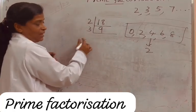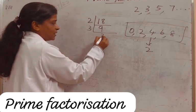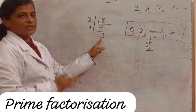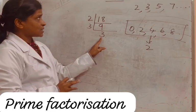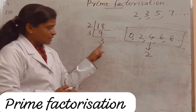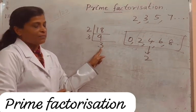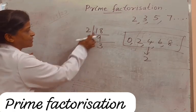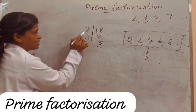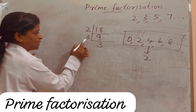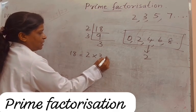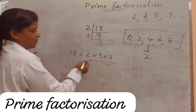9 divided by 3 is 3. Now we got a prime number here, so we can stop. We can stop prime factorization when we get a prime number. So the prime factors of 18 are 2, 3, and 3 — that is, 2 into 3 into 3.